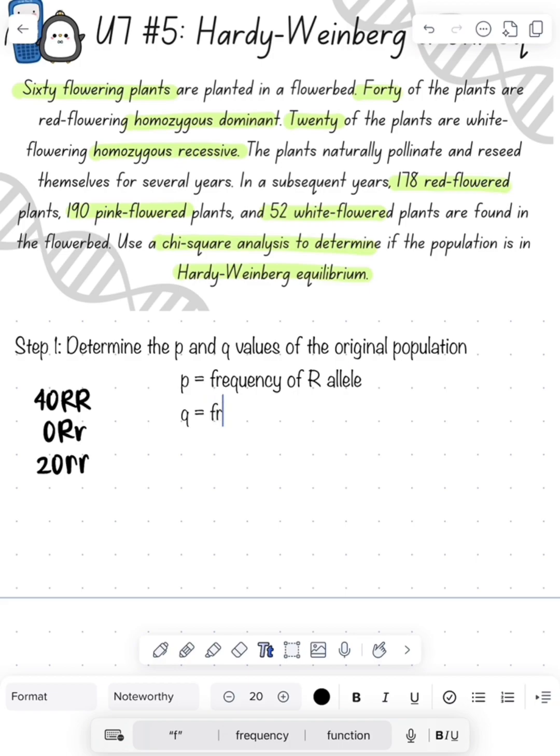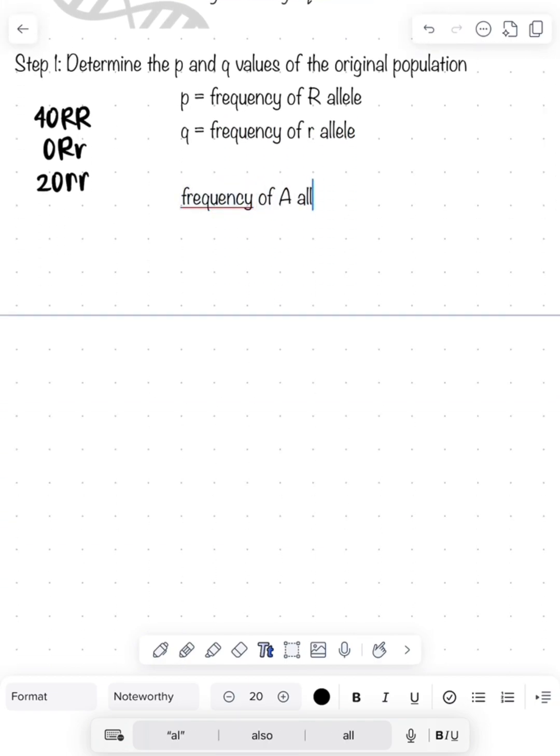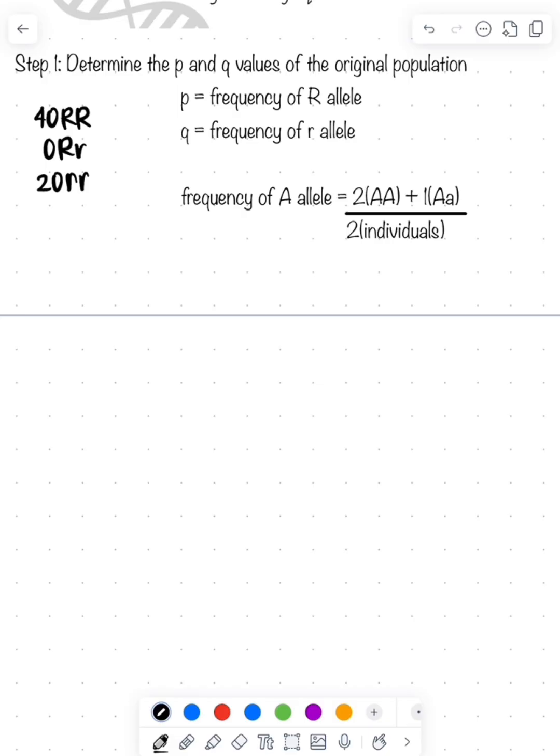I do change these letters for just a second, I'm sorry. So the frequency of my dominant allele is going to be two times the number of individuals that are homozygous dominant, plus the number of individuals that are heterozygous, divided by two times the number of individuals. So P is two times 40, because there's 40 that are homozygous dominant, plus one times zero, because there's zero that are heterozygous, divided by two times 60, because there's 60 individuals. That gives us 80 over 120, which is two-thirds, which is 0.6 repeating.